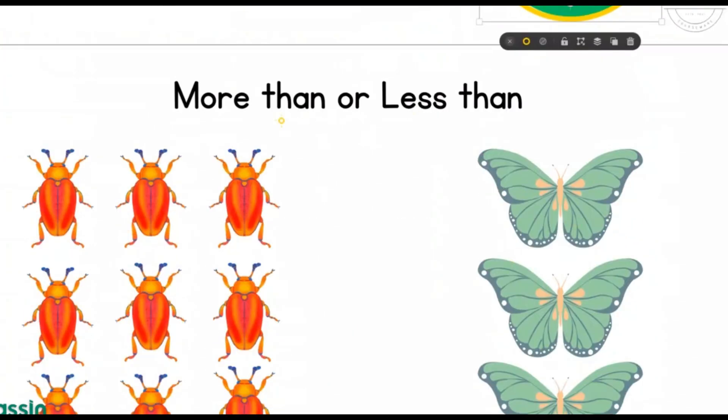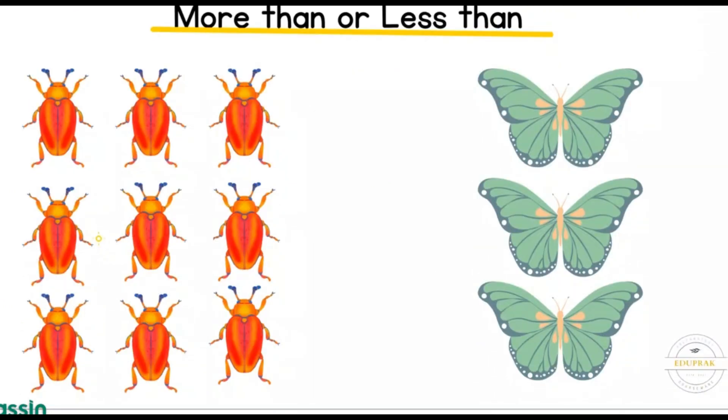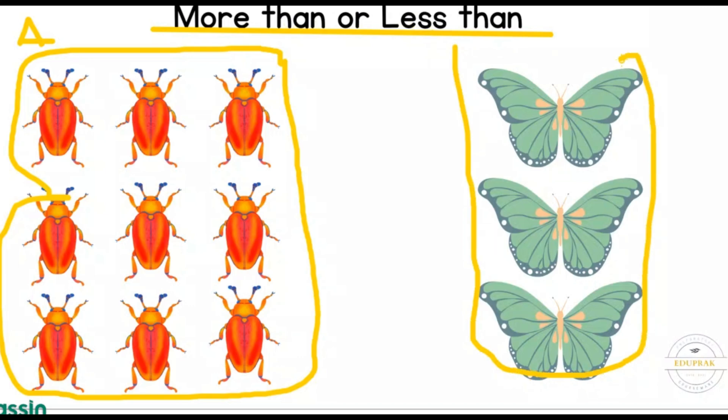More than or less than. Let's look at these different types of insects. On this side we will call this Group A, and on this side we will call this Group B.